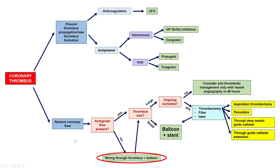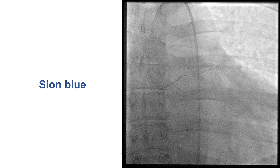The second major goal is to restore coronary flow. If there is some flow, we go straight to assessing the thrombus size. In this case there was no flow, so the first step is to get a wire through the thrombus and perform balloon dilation with a small balloon — typically 2.0 — to restore some flow and determine the next step.